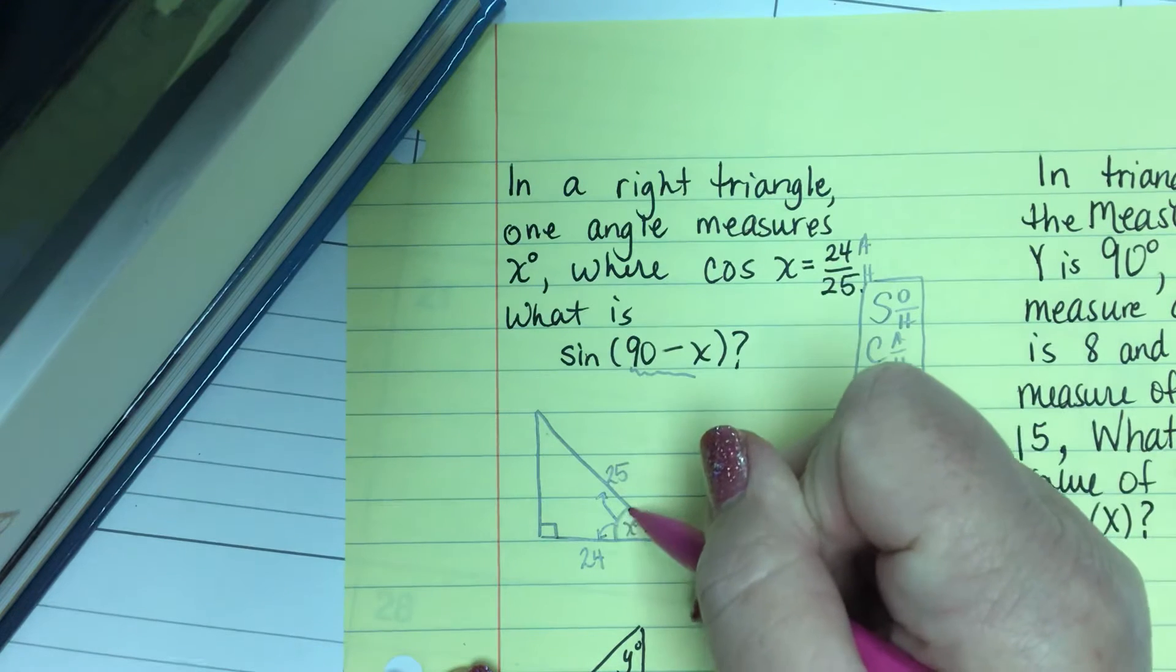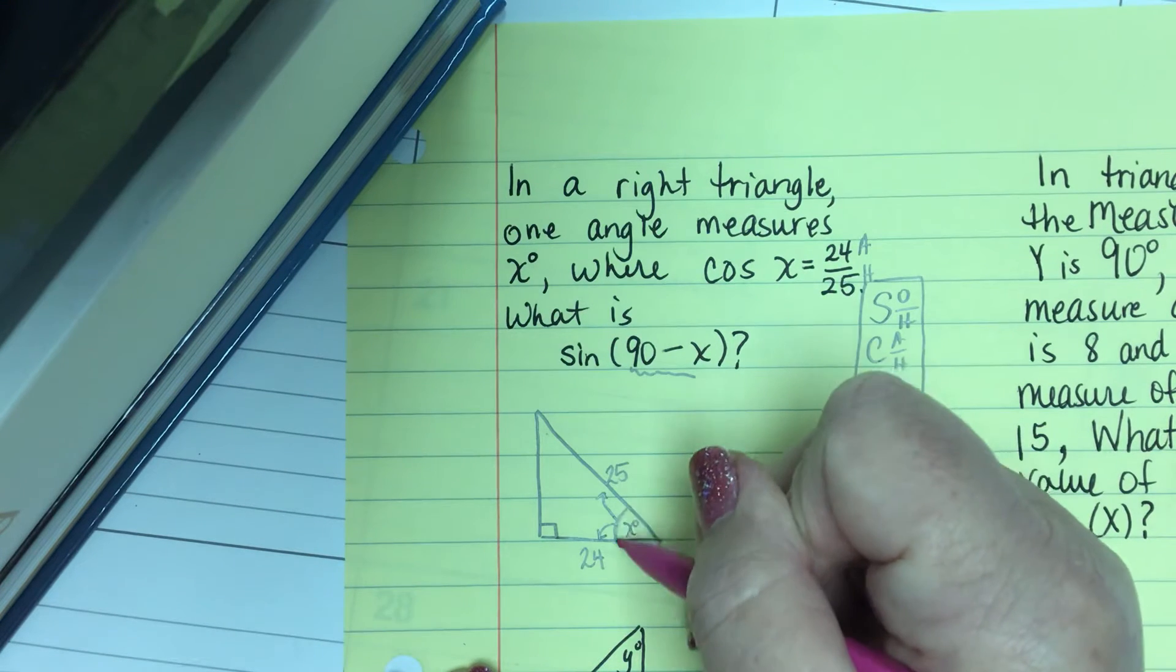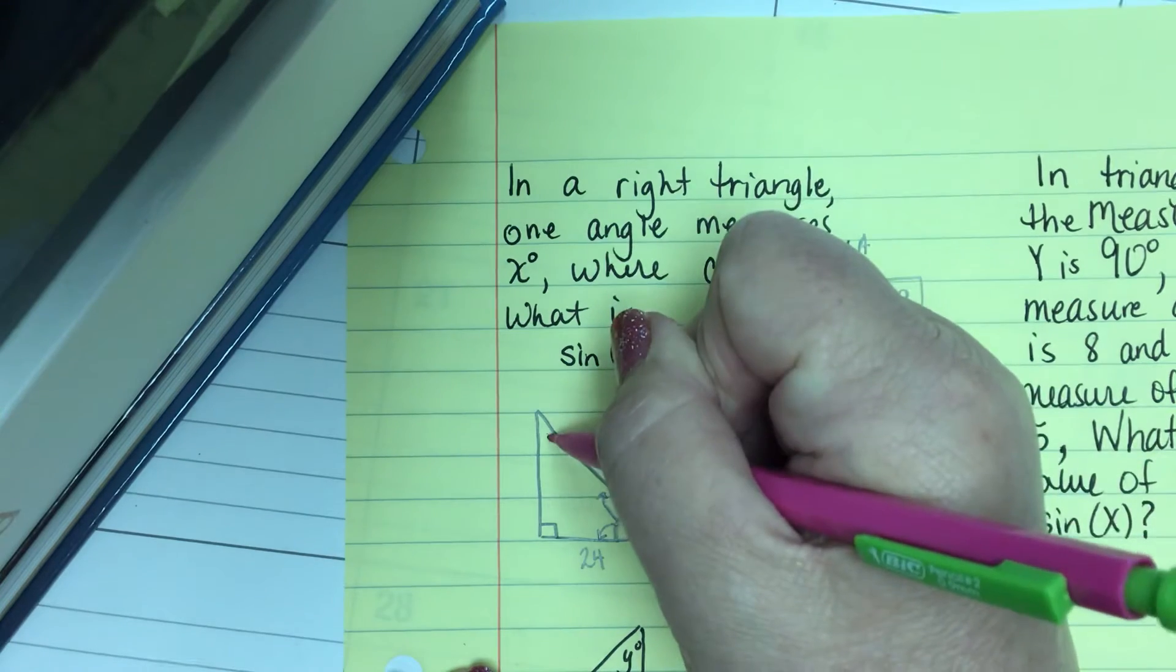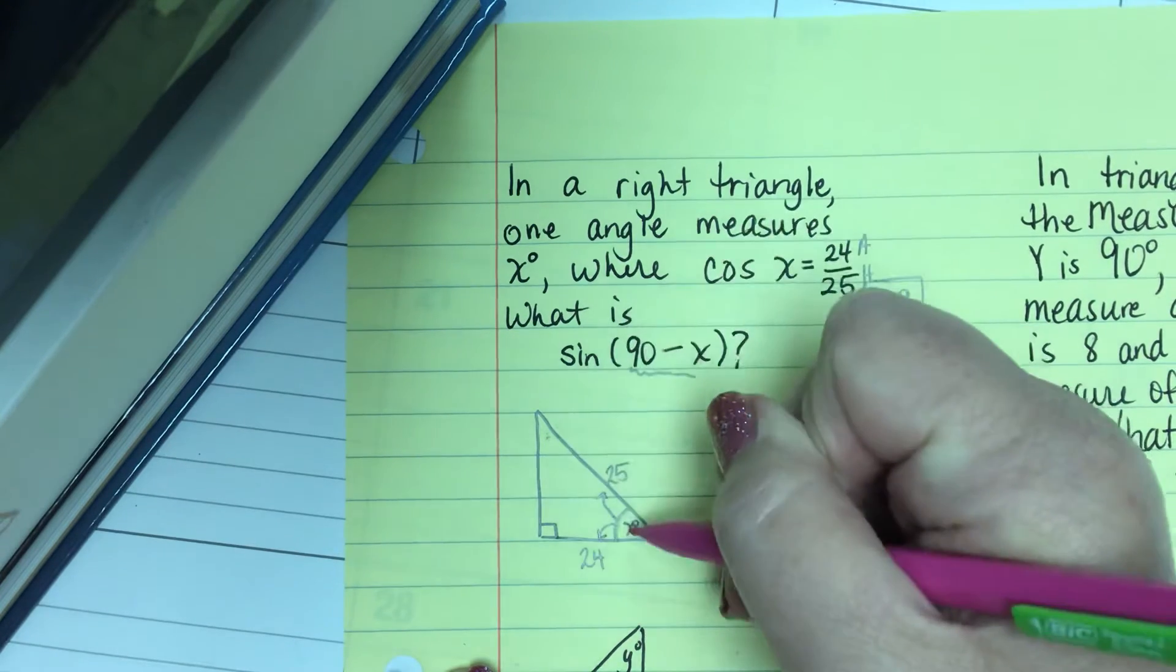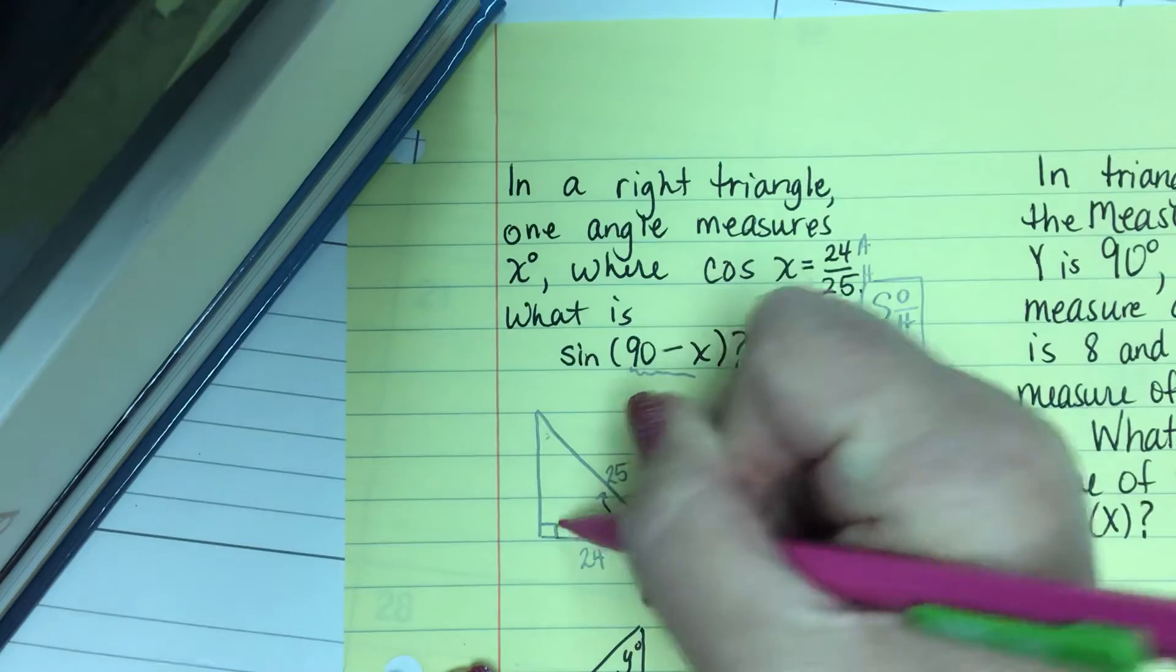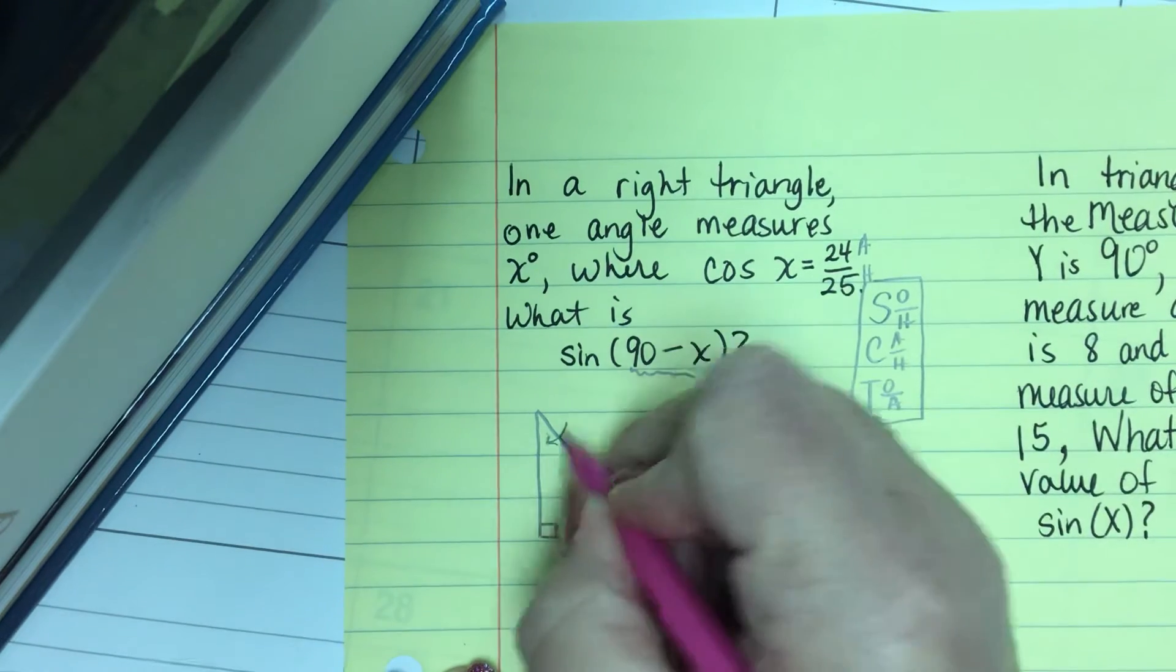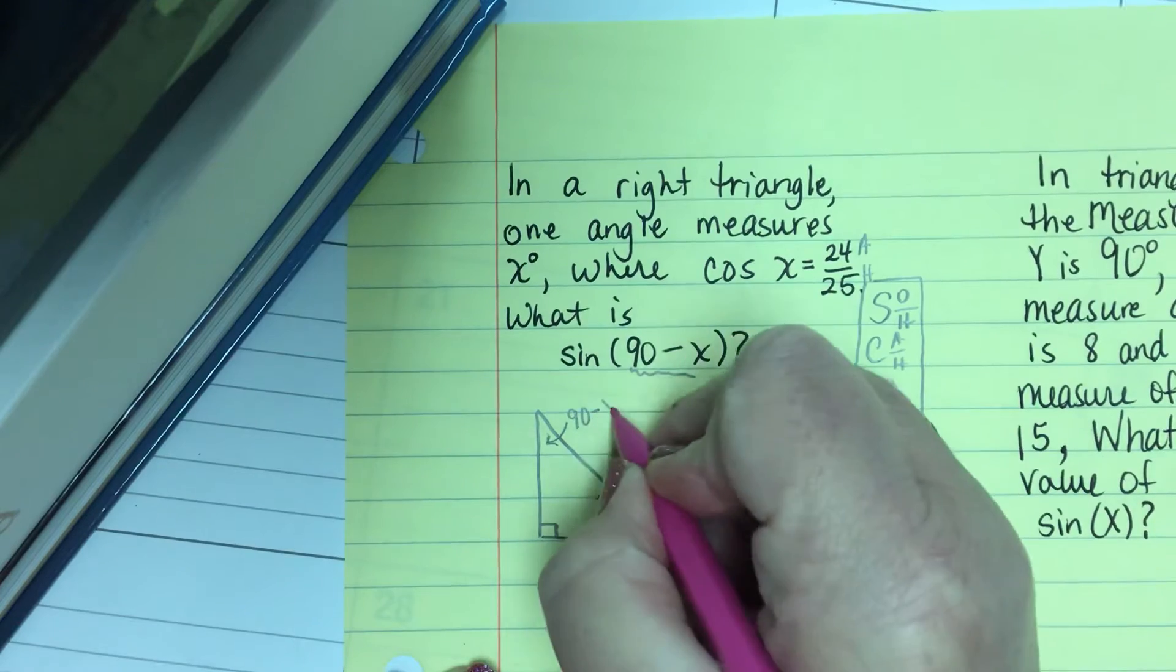If this is 20 degrees, what's 90 minus 20? That's 70, and that would be here. Because 70 plus 20 plus 90 equals 180. So this is actually 90 minus x.